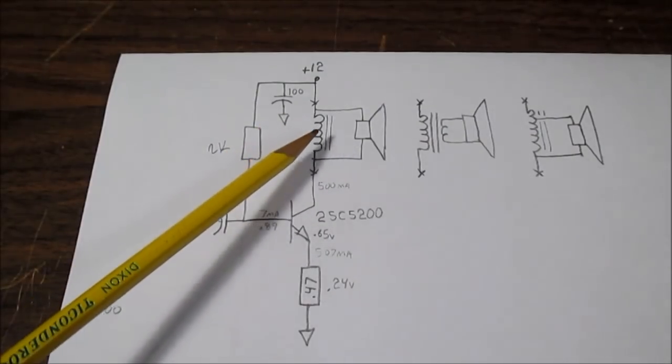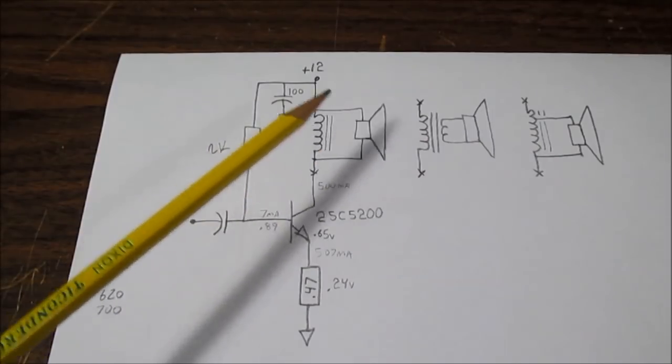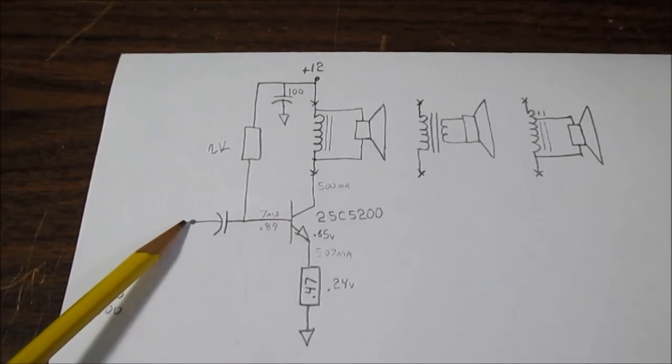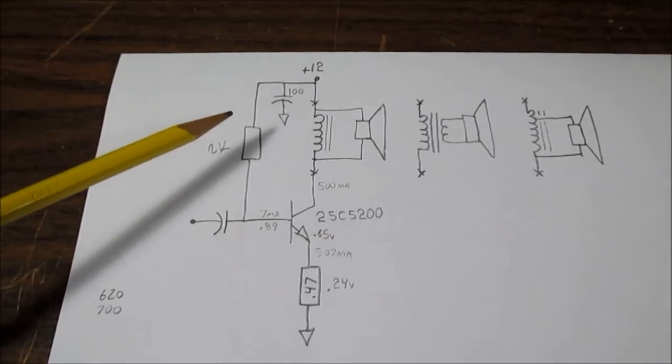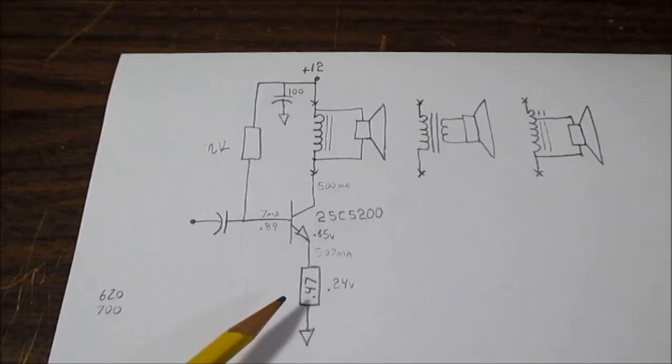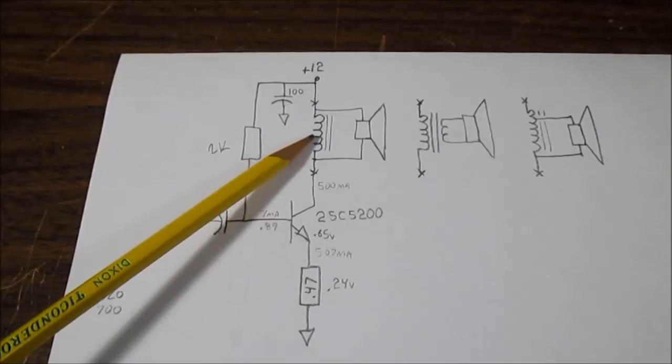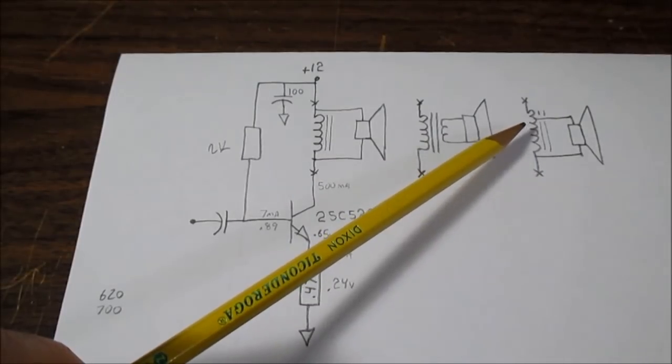If you remember the other video it had a constant current source here which consisted of a couple transistors and resistors, and the driven element which means the audio signal is what's driving this transistor. In this design I'm going to make the circuit as simple as possible. It's going to be as you can see there's not a lot of components here. In place of the active current source we have a coil or it could be a transformer or an auto transformer design.